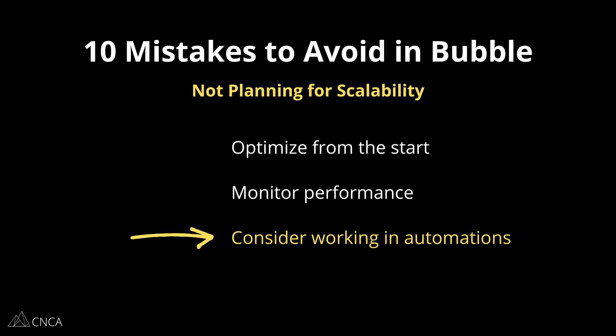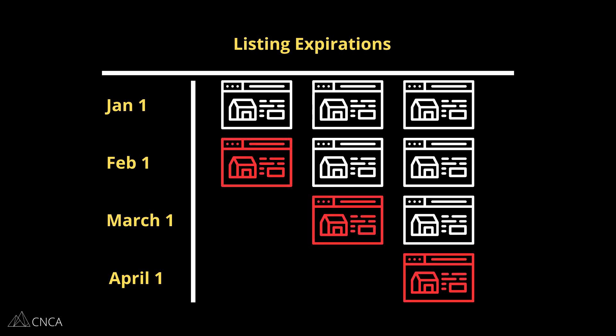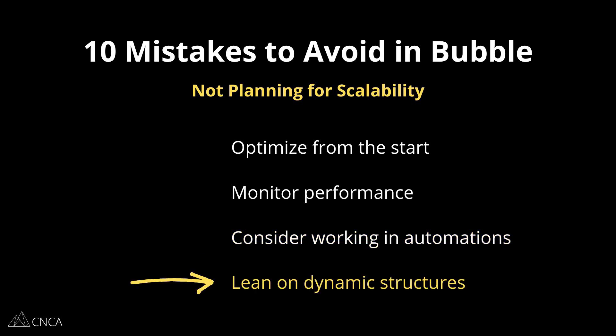Another area to consider for scalability is how manual certain functions are. You may want to design a more automated approach to allow functions to run on their own without manual intervention. For example, in a marketplace, if a listing expires, you can set up a backend workflow to automatically change its status and any other details to pull it off the marketplace, rather than waiting for the seller to manually click a button. Small features like this may not be a big deal in the short term, but at scale, with higher volumes of data, you may benefit from creating logic that works for you rather than you working for it. Also, lean on dynamic data and dynamic structures — instead of designing three separate image elements to display a limited gallery for a listing, use a repeating group so you can display as many images as the seller has uploaded. Thinking in terms of dynamic structures keeps features like this more scalable.